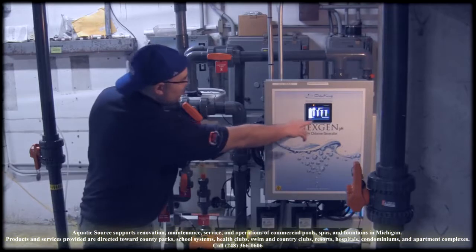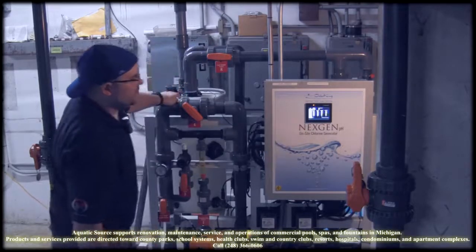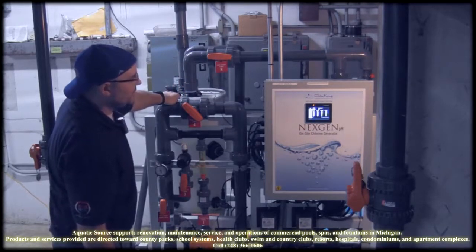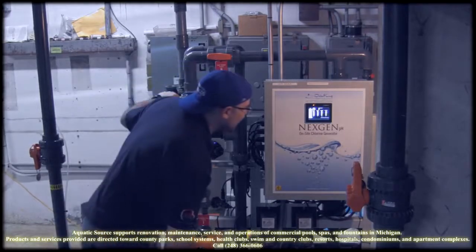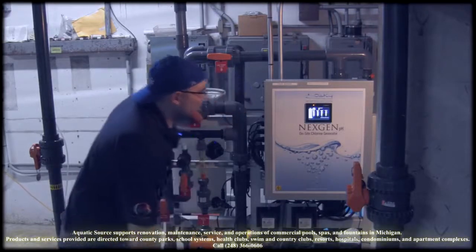And then these two bars over here, when the unit actually starts producing the chlorine, you're going to get the DC volts on the cell itself as well as the amps.